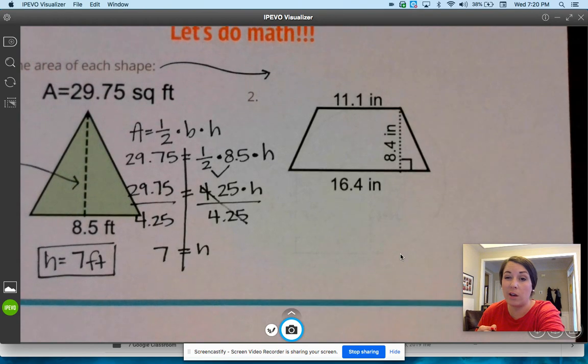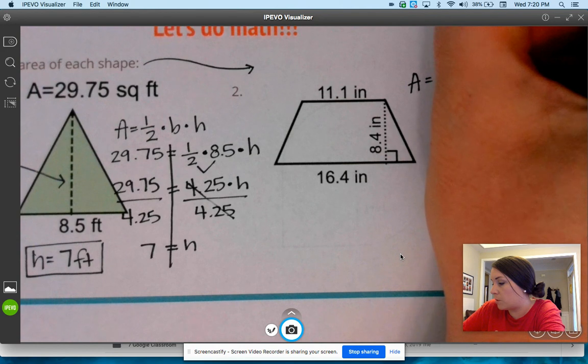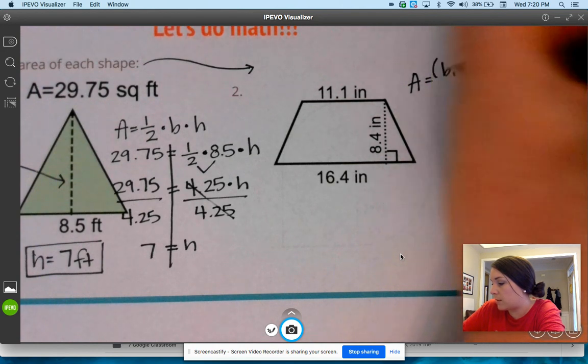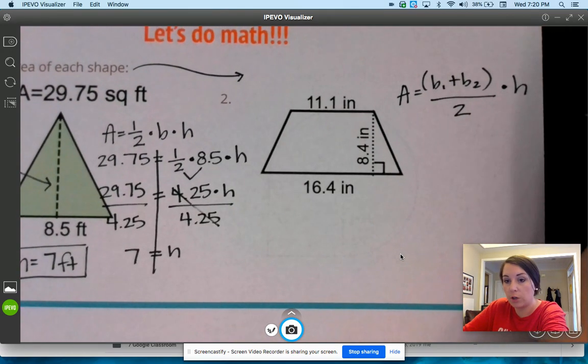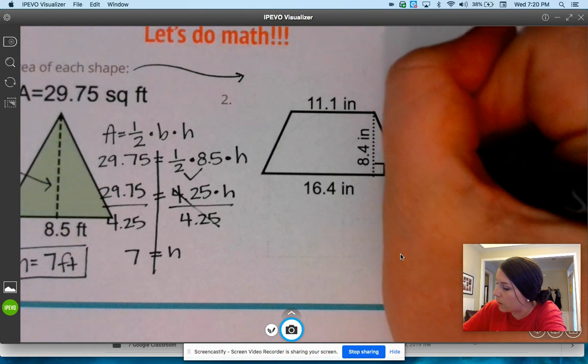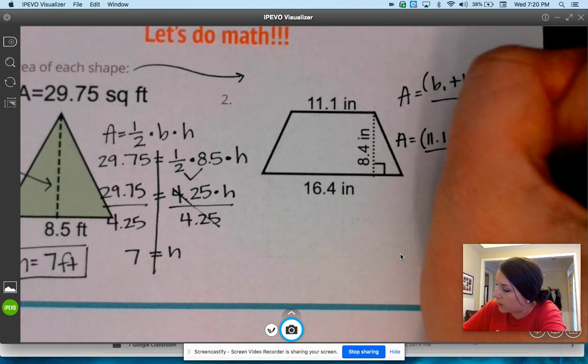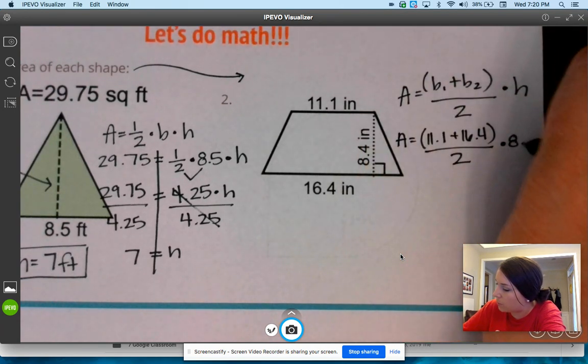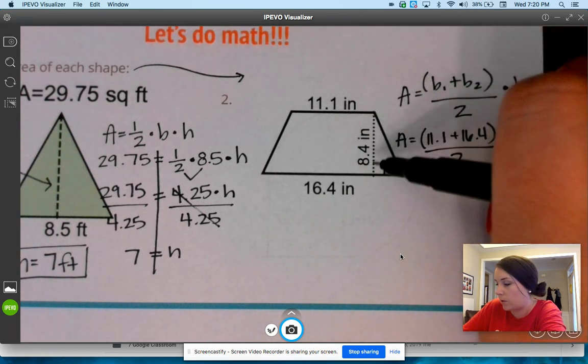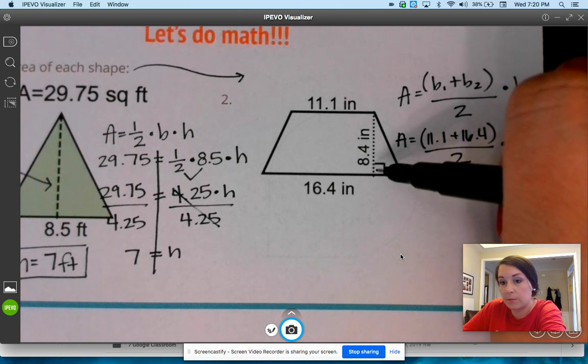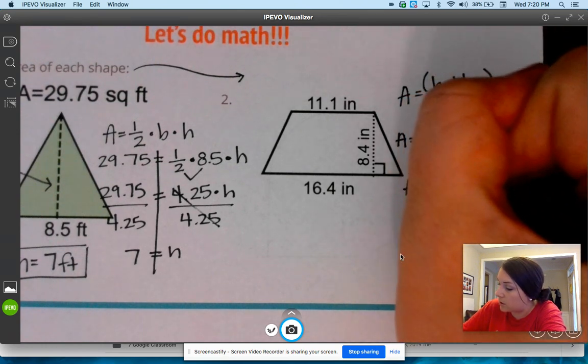Next one, I just wanted to review a trapezoid because I think we kind of forget them. So area equals base 1 plus base 2 in parentheses, divided by 2, times the height. Write the formula. Fill in what you know. So area is equal to 11.1 plus 16.4, divided by 2, times the height of 8.4. We know it's the height because it has that dotted line. We can also see that they put a square right here to symbolize that's 90 degrees, so we know these are perpendicular, making the height.